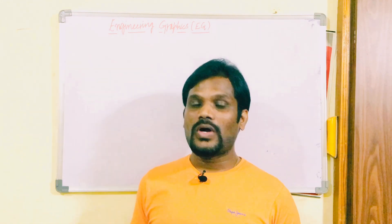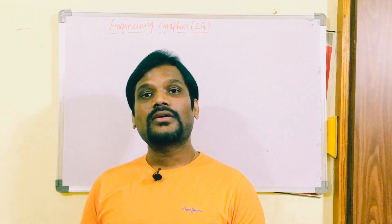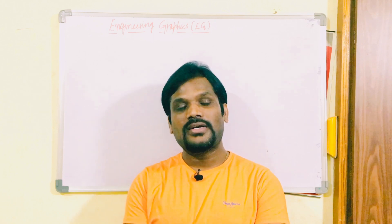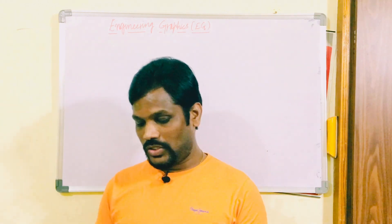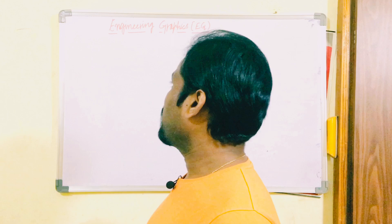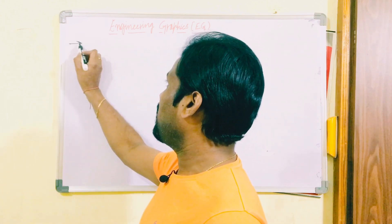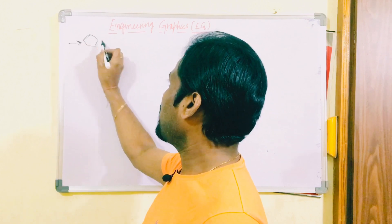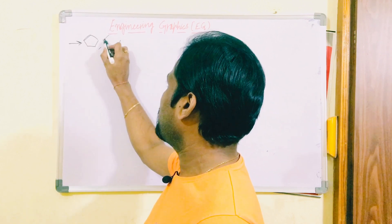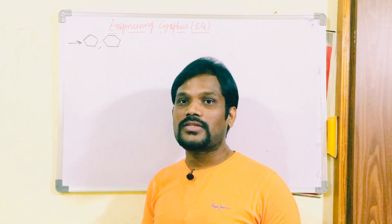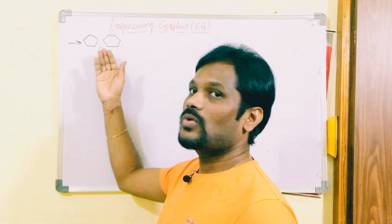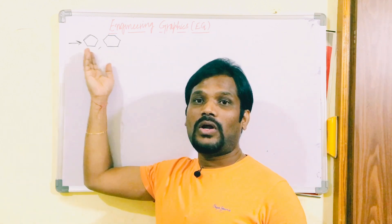Please concentrate on this lecture about conic sections. There are two methods: the eccentricity method and other methods. Based on my analysis of previous year question papers, they were asking students to construct even the pentagon and hexagon — for a 5-mark question. I hope you know how to construct a pentagon and hexagon, as they appear in previous year papers.